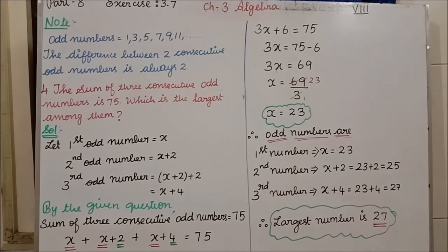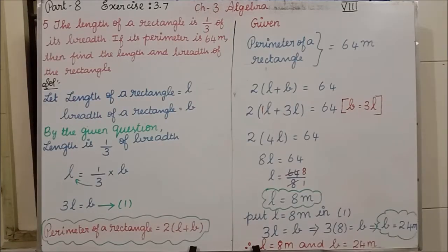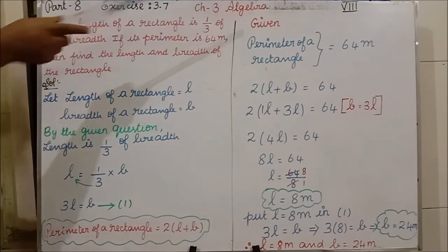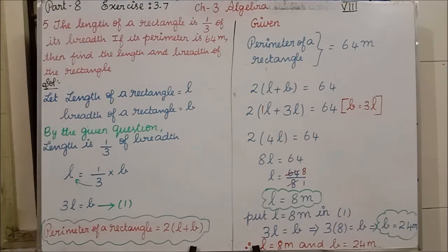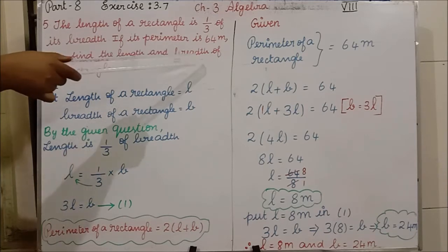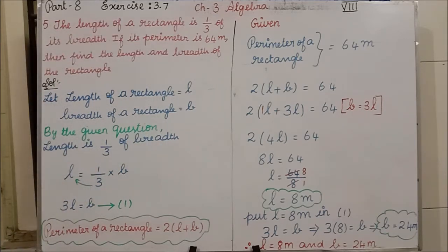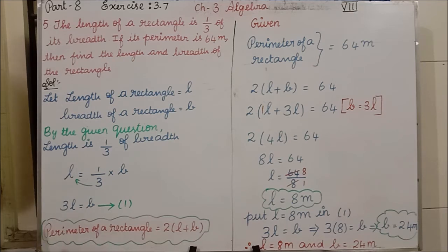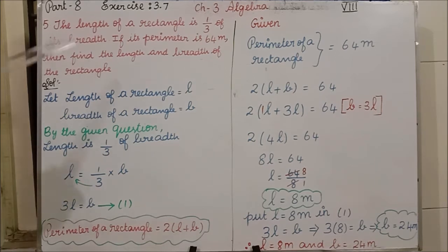Now we will see the 5th question. See the question: the length of a rectangle is 1/3 of its breadth. If its perimeter is 64 metres, find the length and breadth of the rectangle.